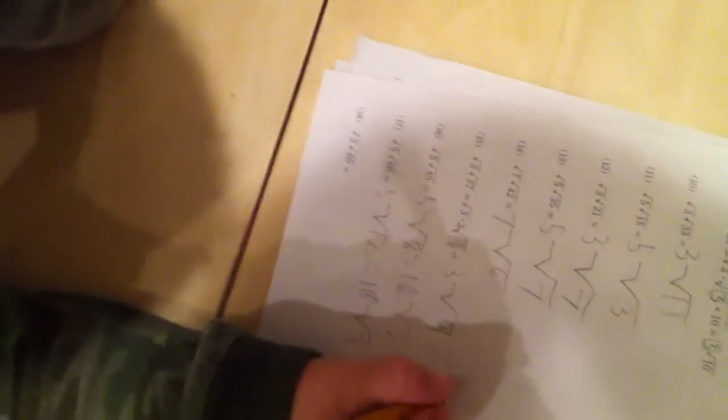It's easy. 3 times the square root of 3 is just 9 times the square root of 3. Look at that one more time.